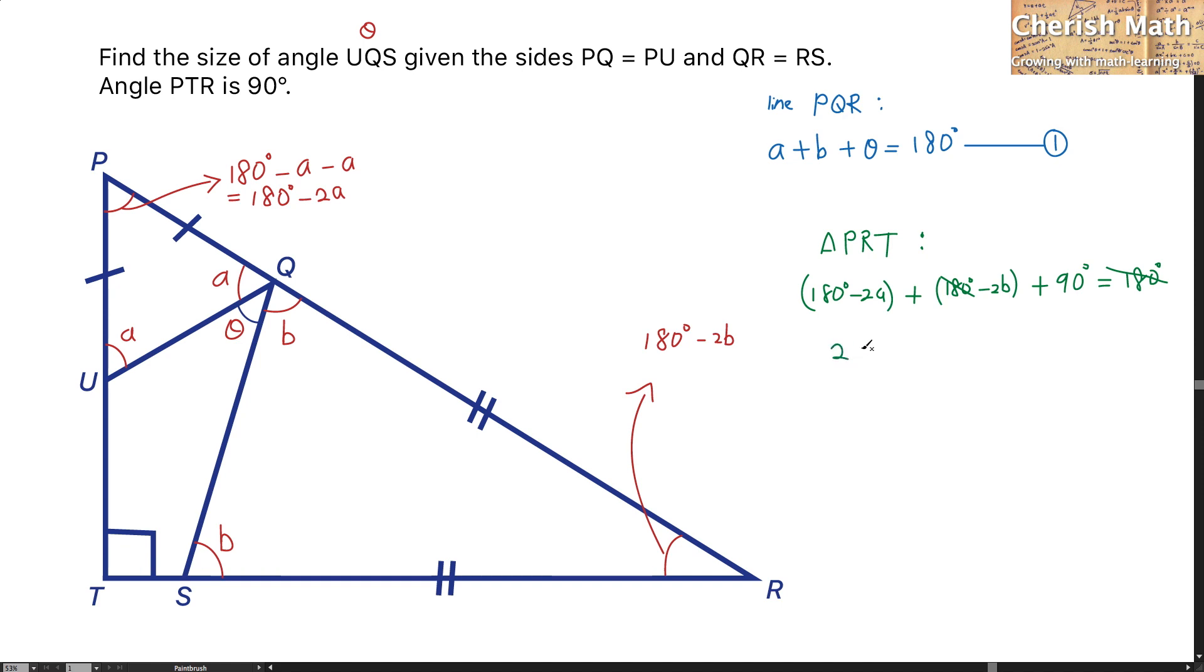And it turns 2A plus 2B equals 270 degrees. Now I keep on simplifying. That turns A plus B equal to 135 degrees. It serves as the second equation for this part.